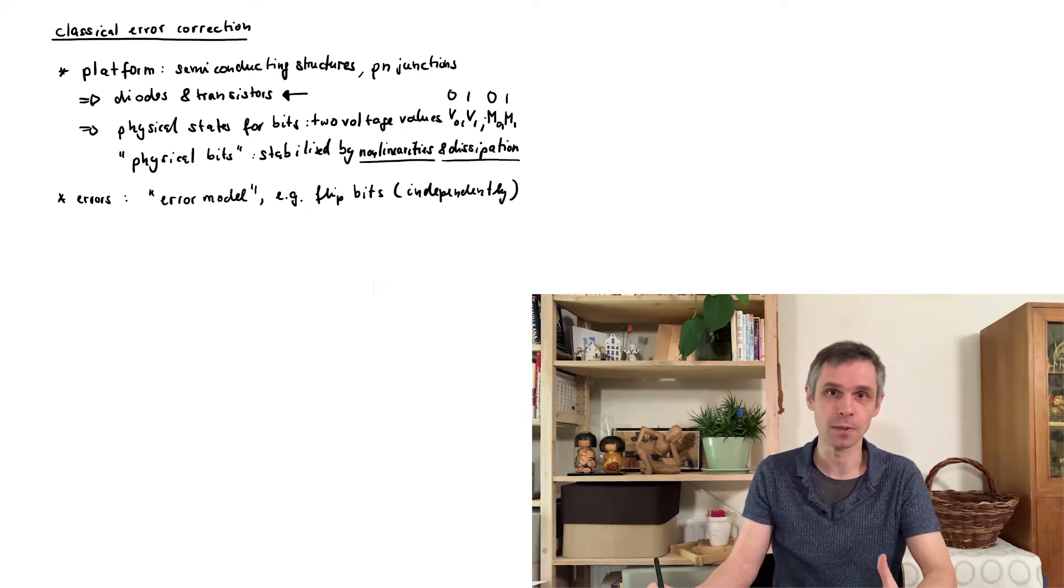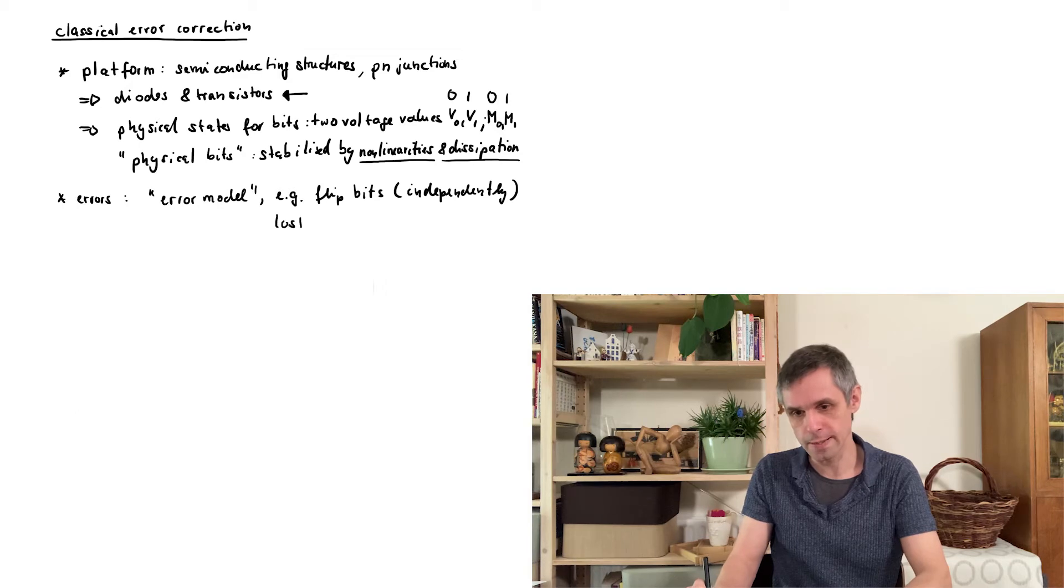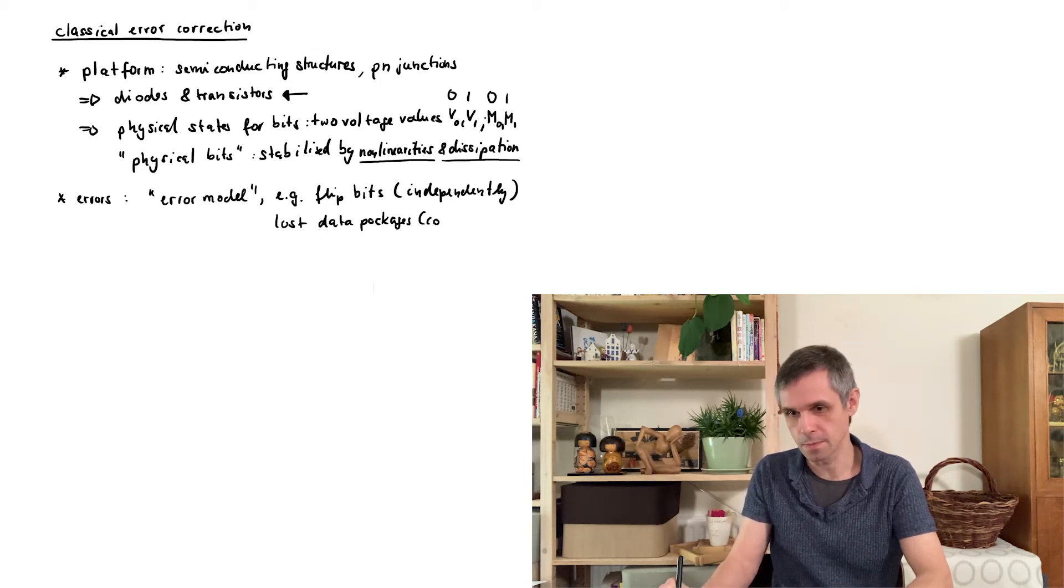And when we think about the communication between different components in a computer or between different computers, then it could occur that some of this information just doesn't arrive. So that would be the case of lost data packages. And such packages consist of several bits. So this would be in some way correlated.